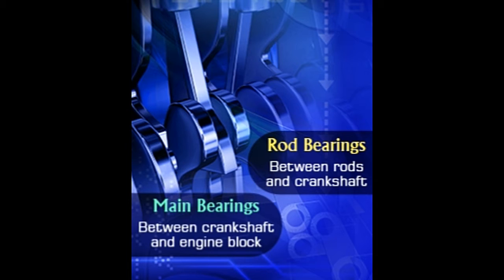Did you know? Engine bearings are made of layers of different metals, with some layers even thinner than 1,000th of an inch. An engine has several moving parts connected to one another, such as rods and pistons. To prevent the connected parts from wearing each other out, they need to be lubricated. This lubrication is provided by inserting bearings between surfaces which rub against each other.